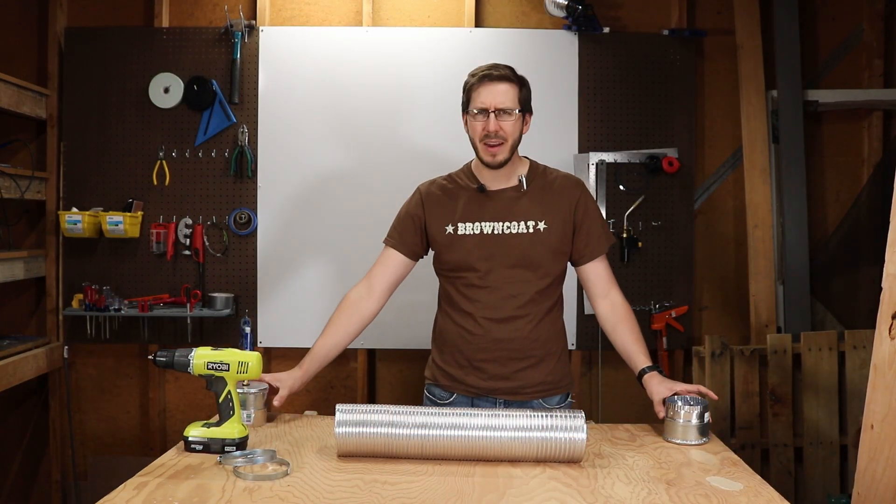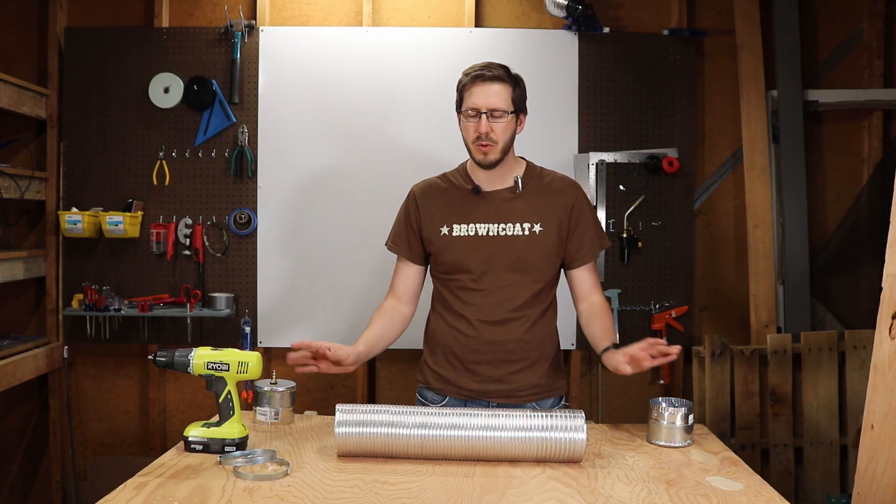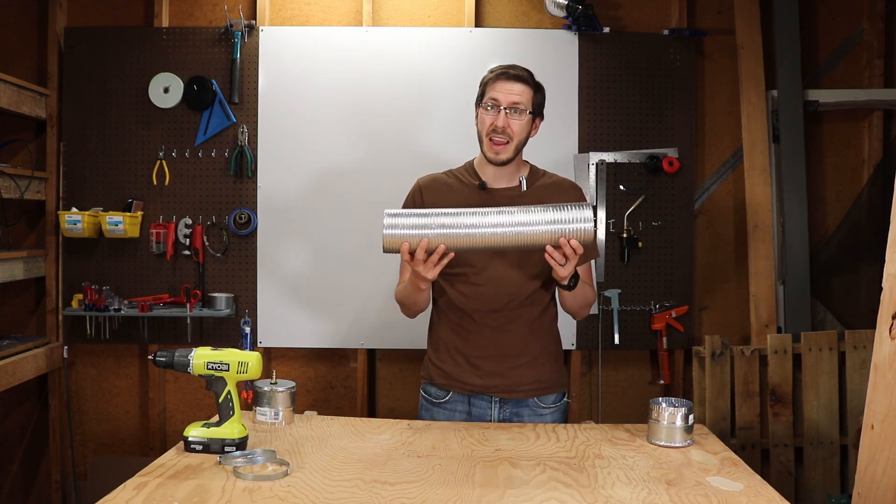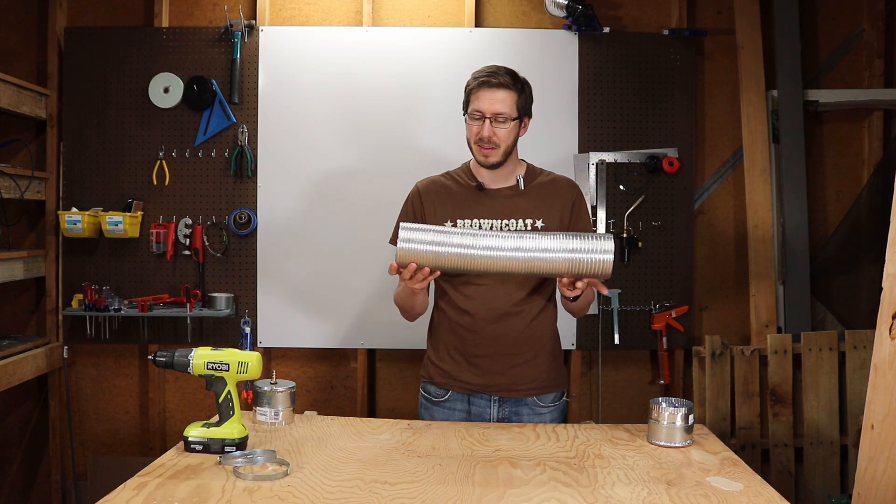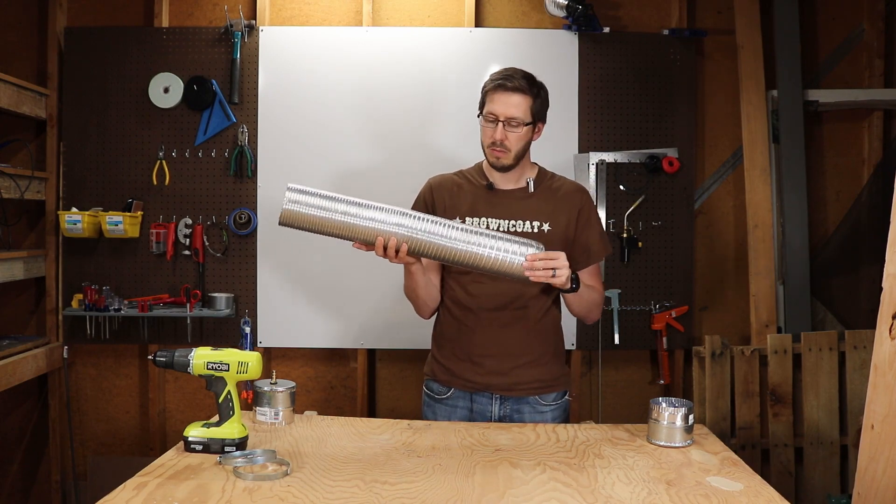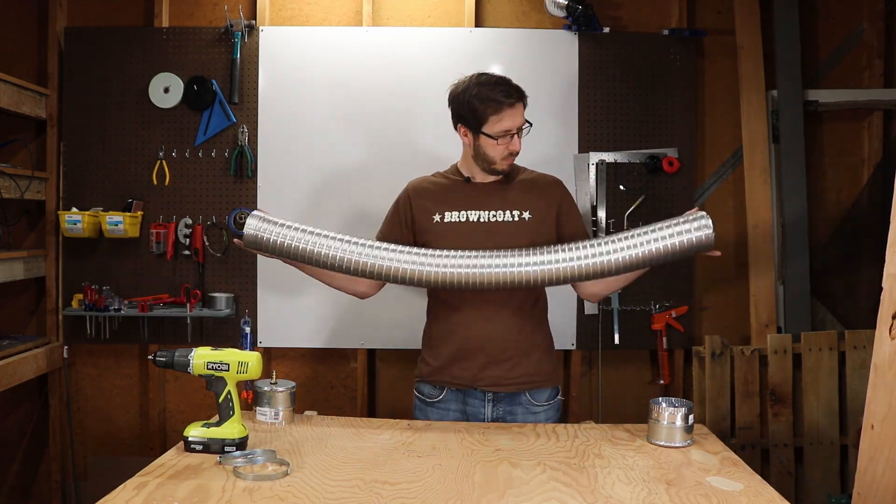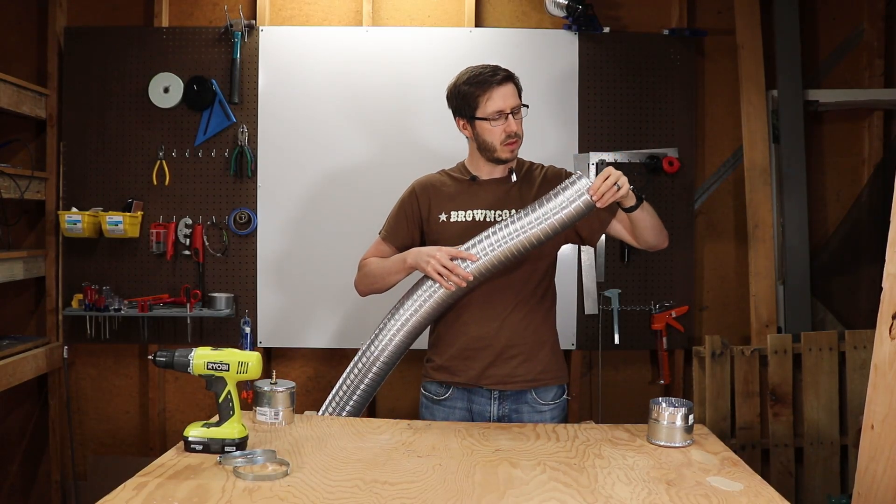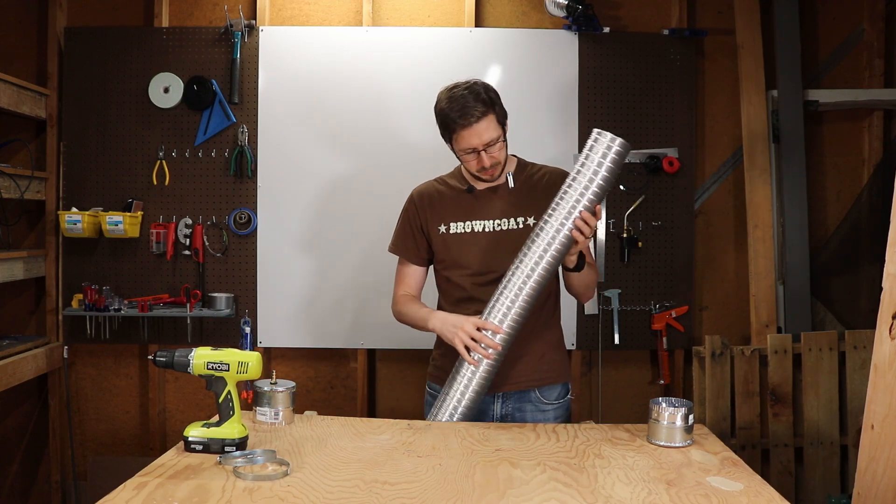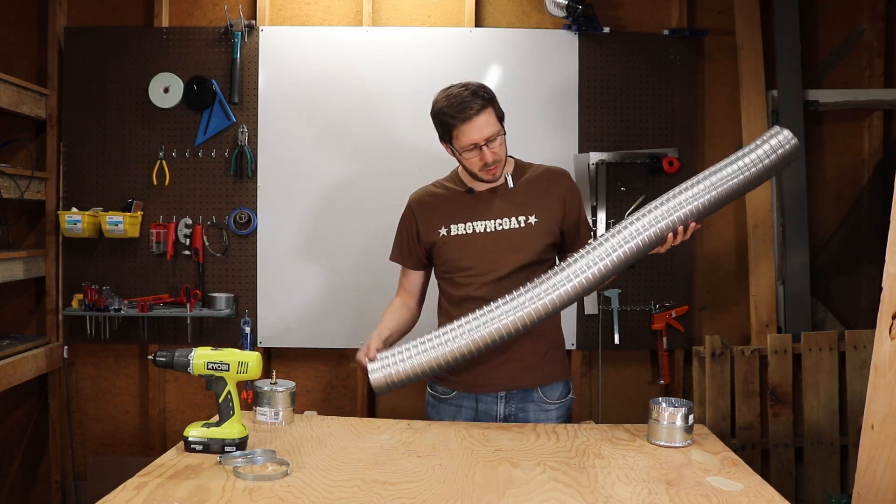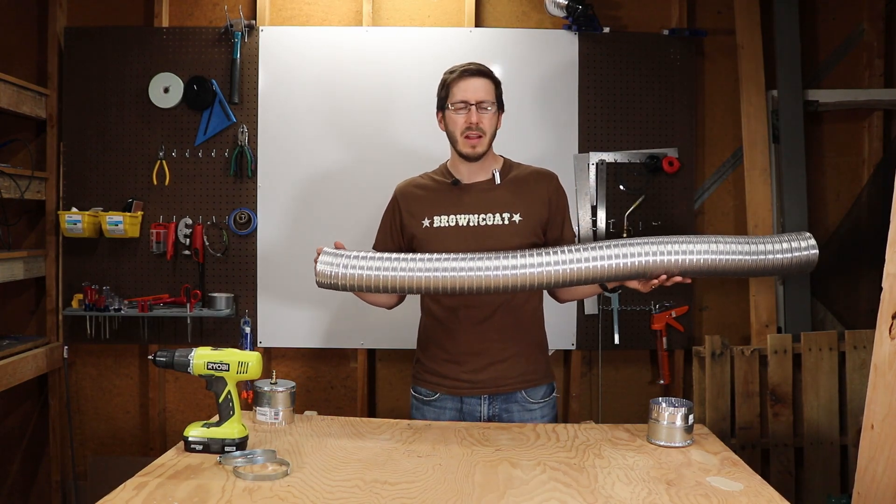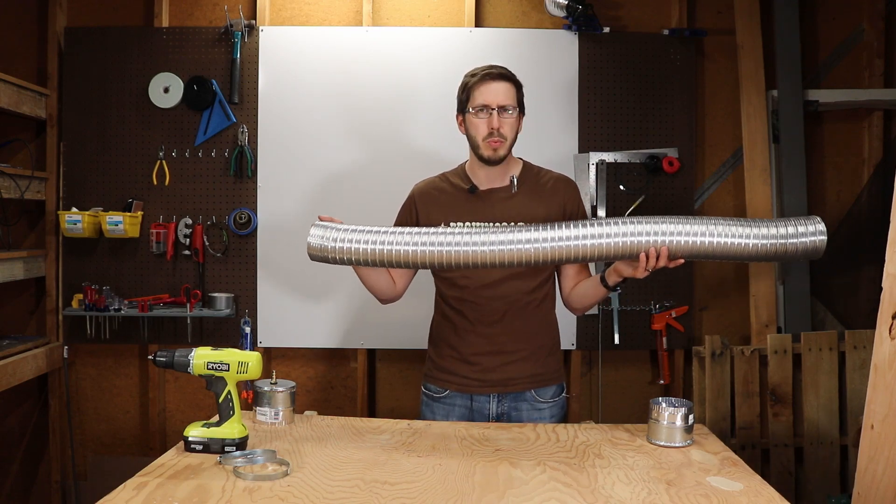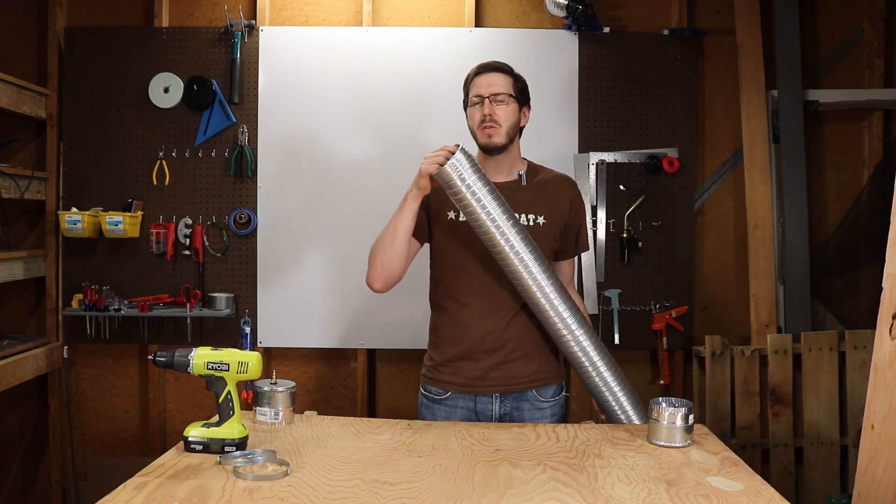So now that we have both of our end caps done, it's time to work on the tube itself. So this, if you can believe it, is actually an eight foot long tube compressed to about two feet. And we're learning something really important here—that the way this is constructed, this is a series of spirals, so it's actually important for us to extend in some ways to our desired length to actually make sure that our holes are lined up with each other, because otherwise as you pull this out the body itself rotates ever so slightly.